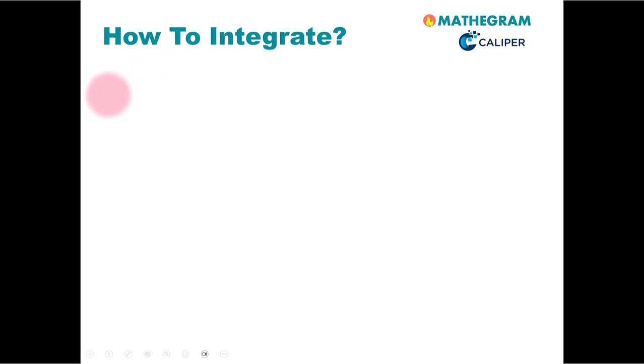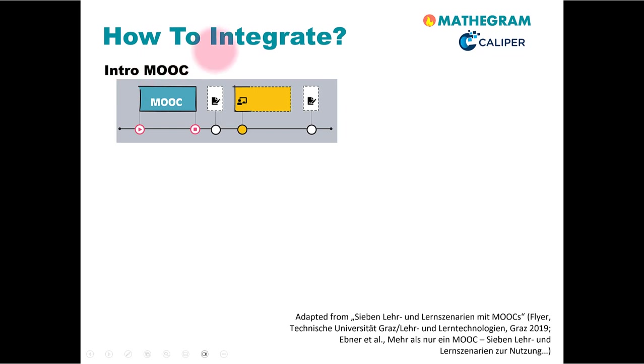But if you want to combine it with classical teaching, you can design it like this. For example, you give the students a MOOC at the very beginning. This is starting the MOOC, this is ending the MOOC. Then you have a quiz at the end of the MOOC. That can be, for example, the quizzes that you have as a part of this MOOC. And then you do classical in-classroom teaching with a final examination. So this would be the variation called intro MOOC.